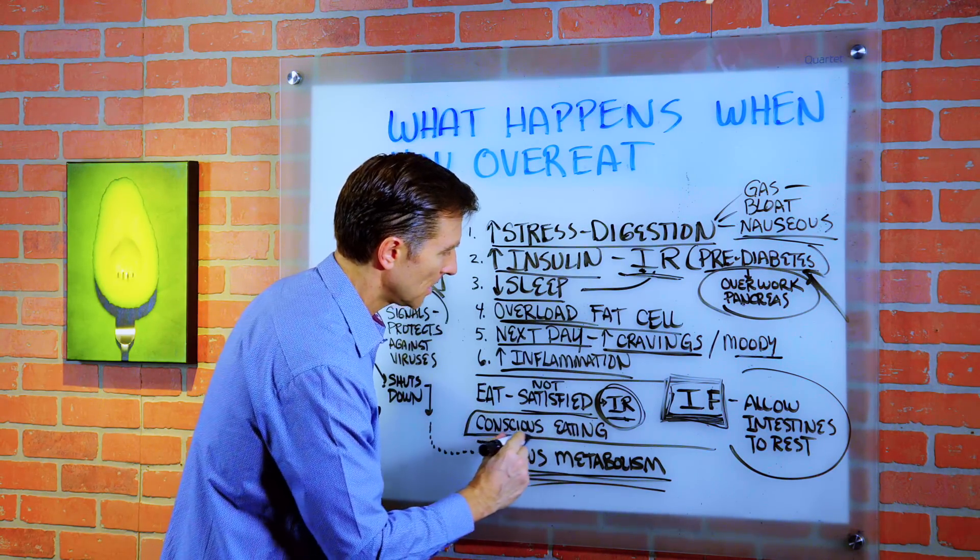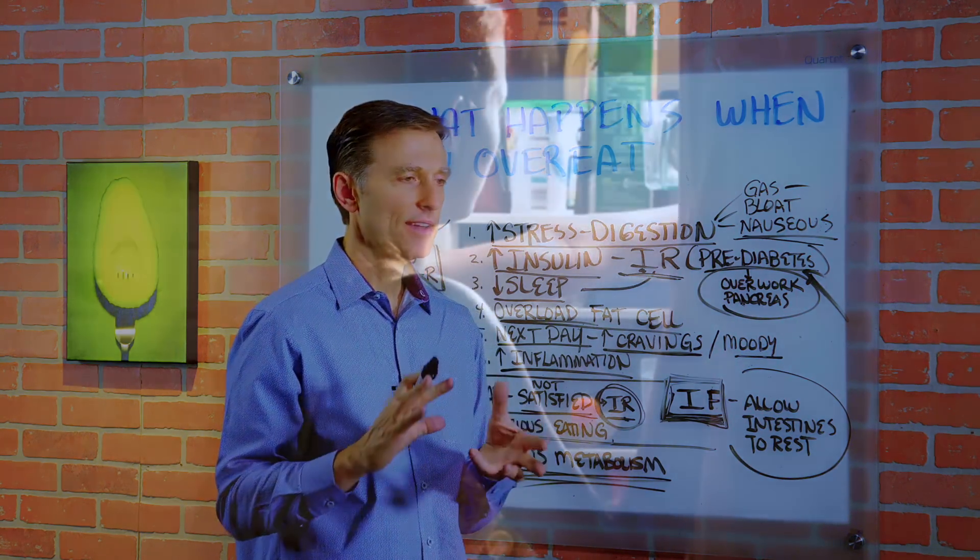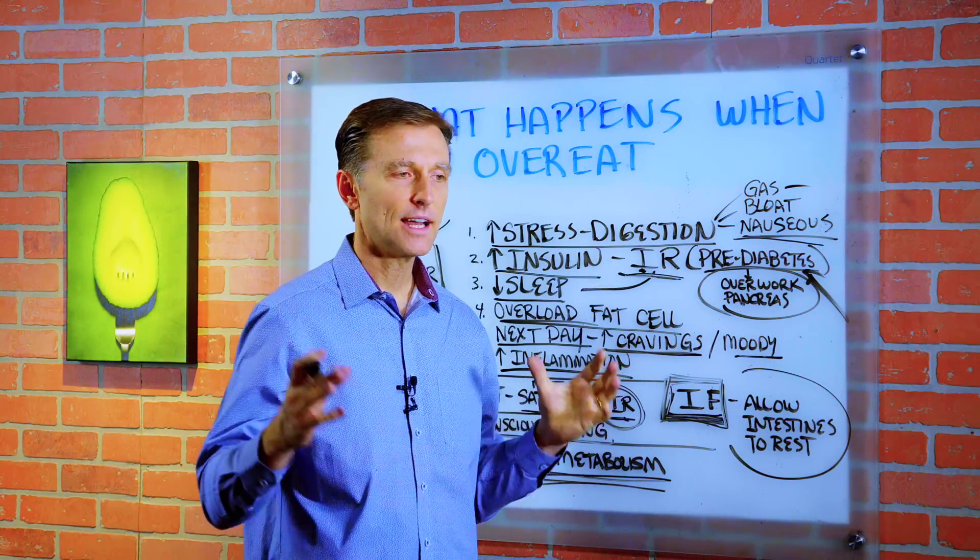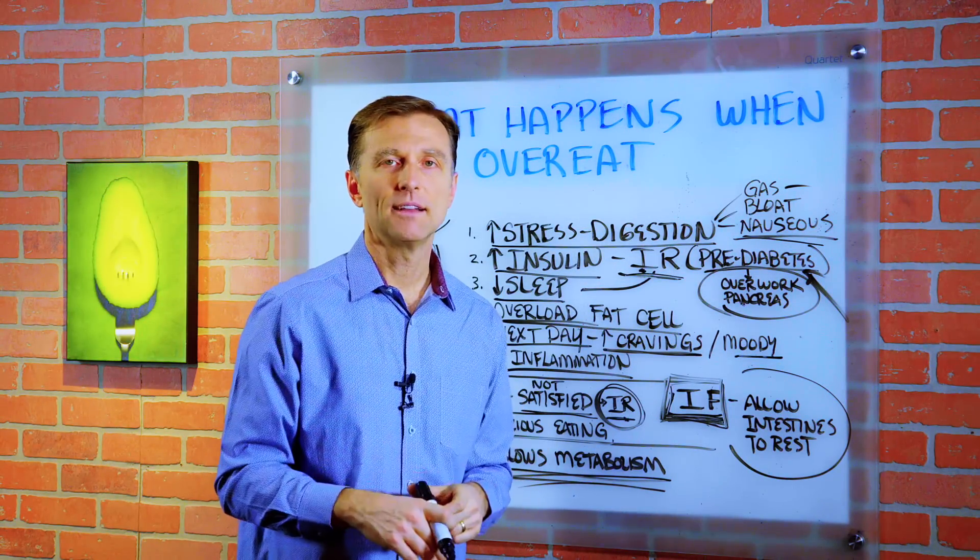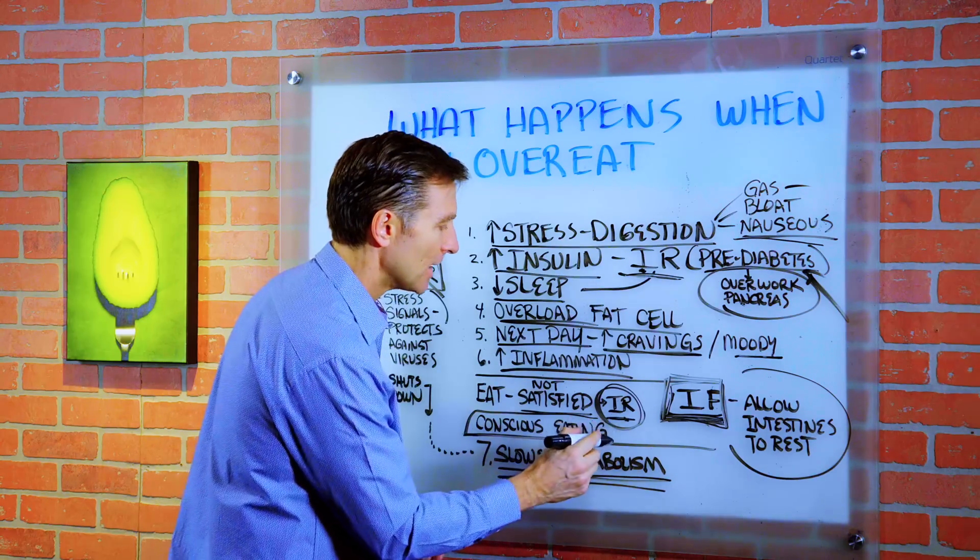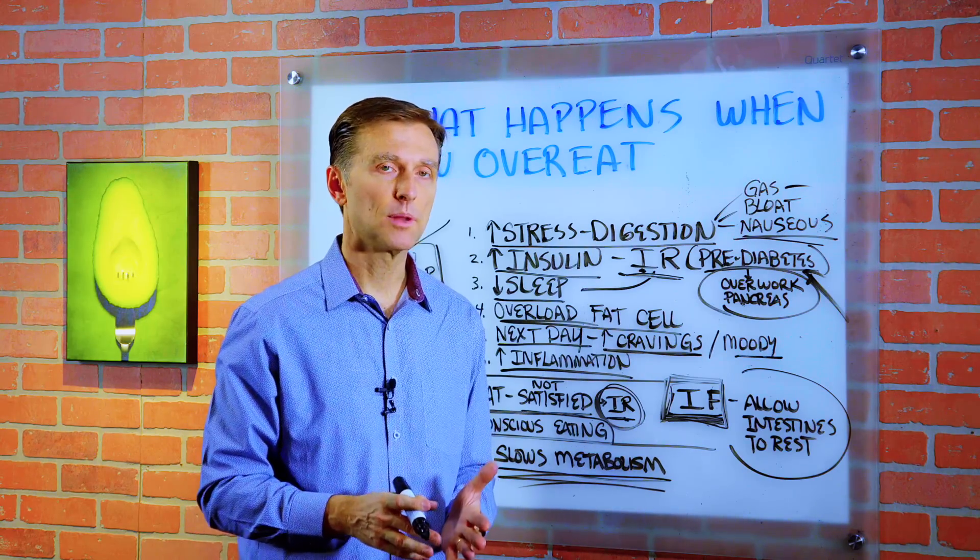Conscious eating. Even with people on keto, what happens is they get home and they start watching TV and they just start snacking. Okay. And on nuts and things like that, certain keto friendly snacks and bars. And what happens is they're still overeating. Maybe it's not bad foods, but they're still overeating. So it's a problem.